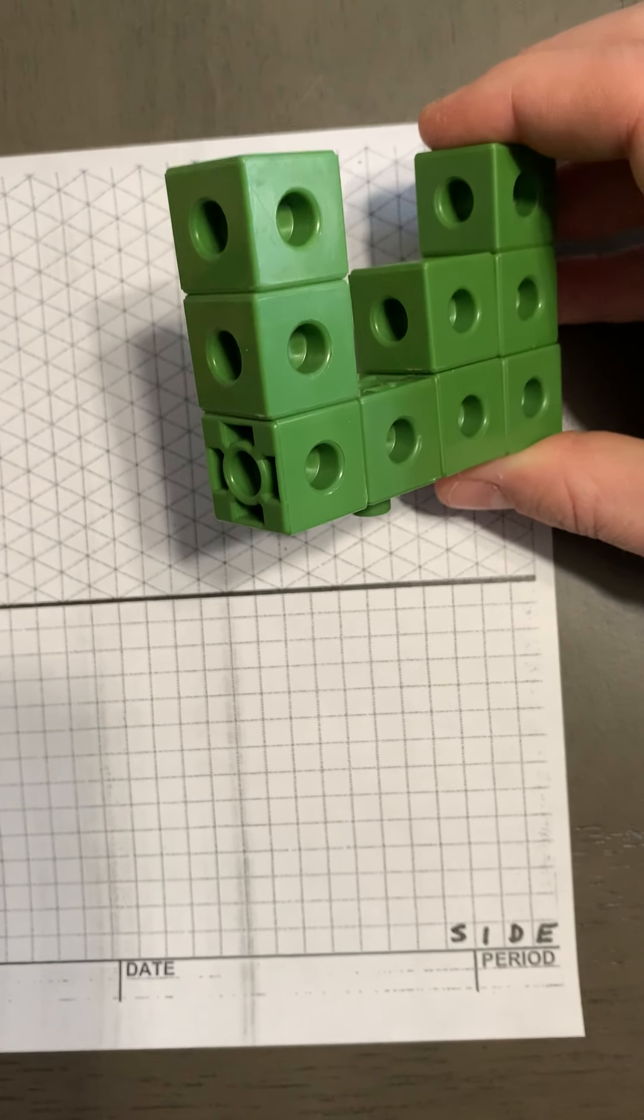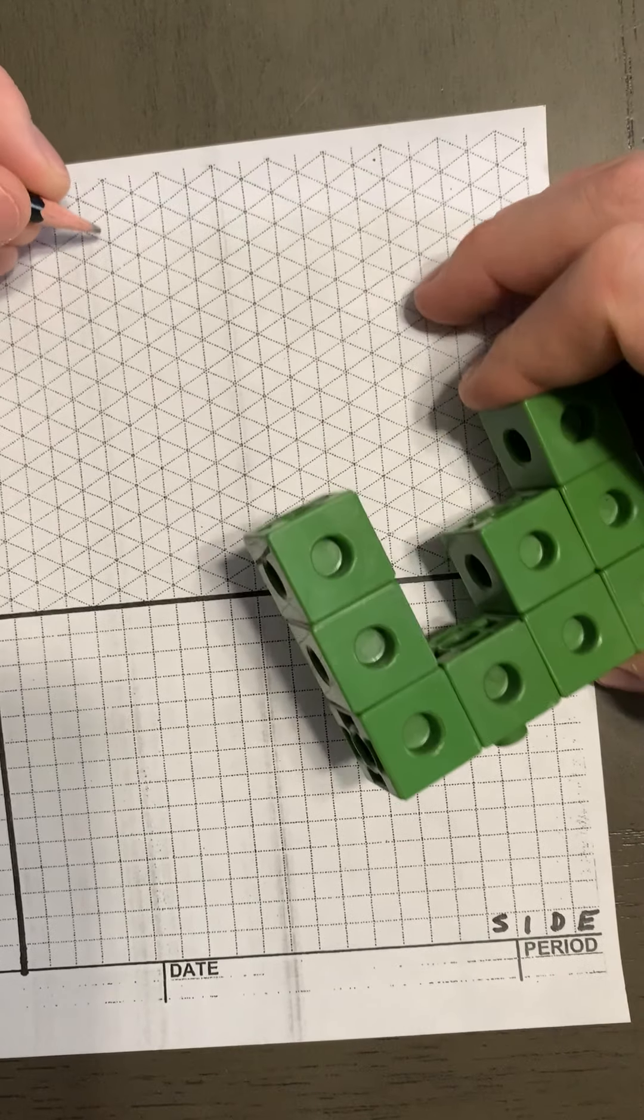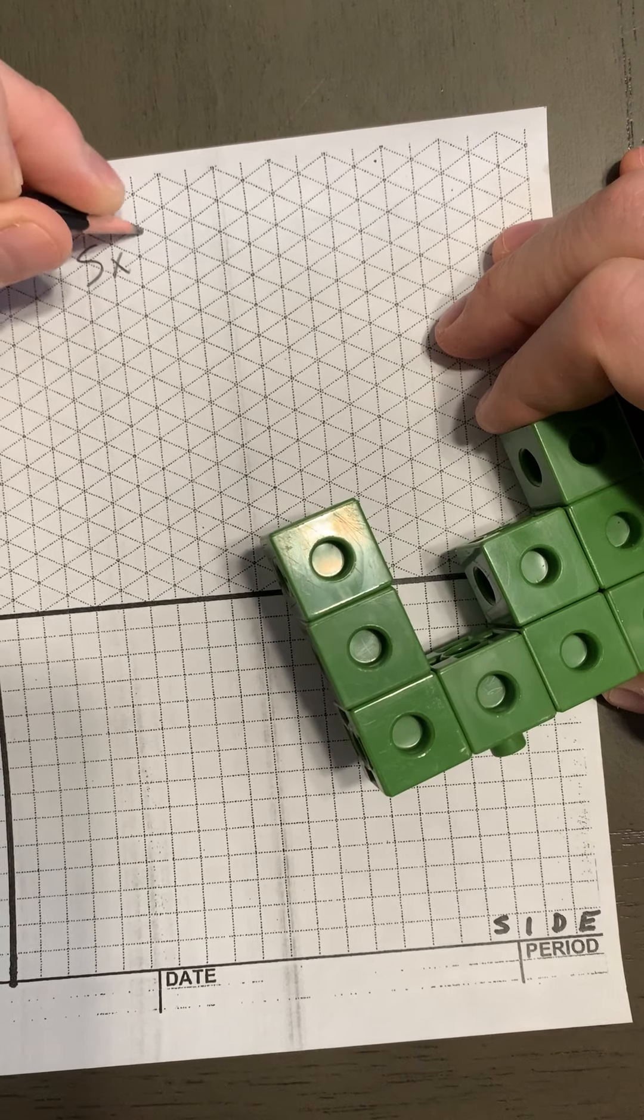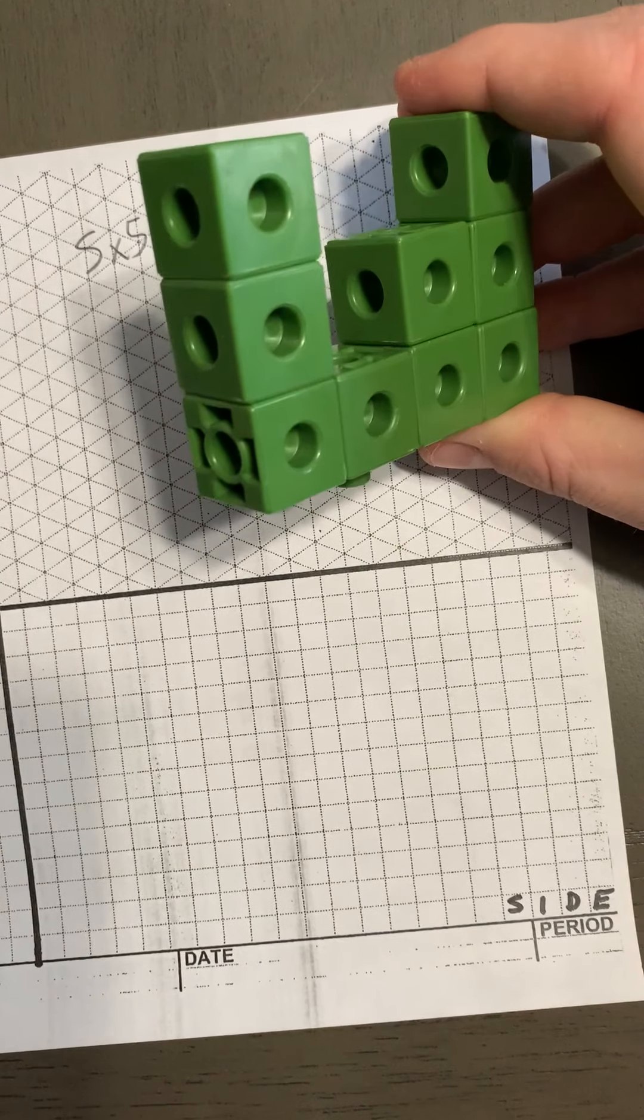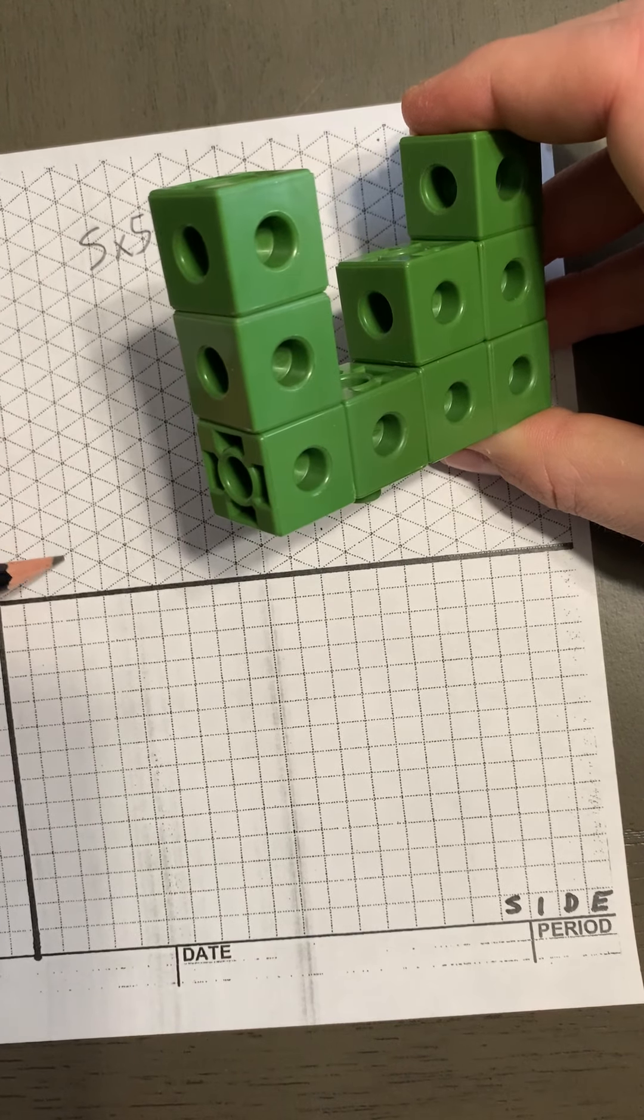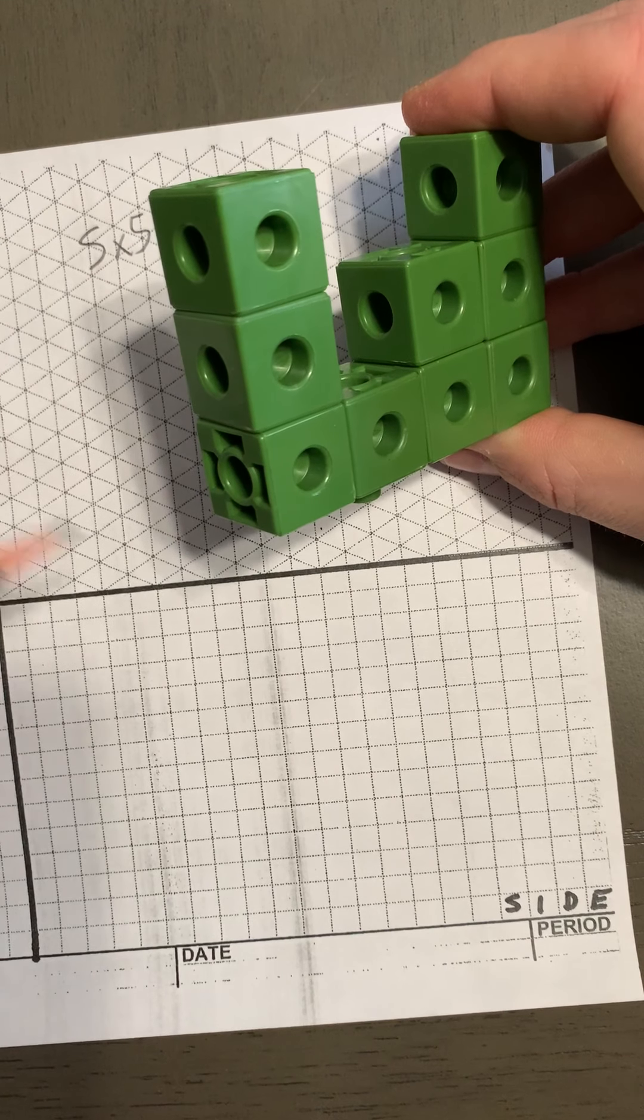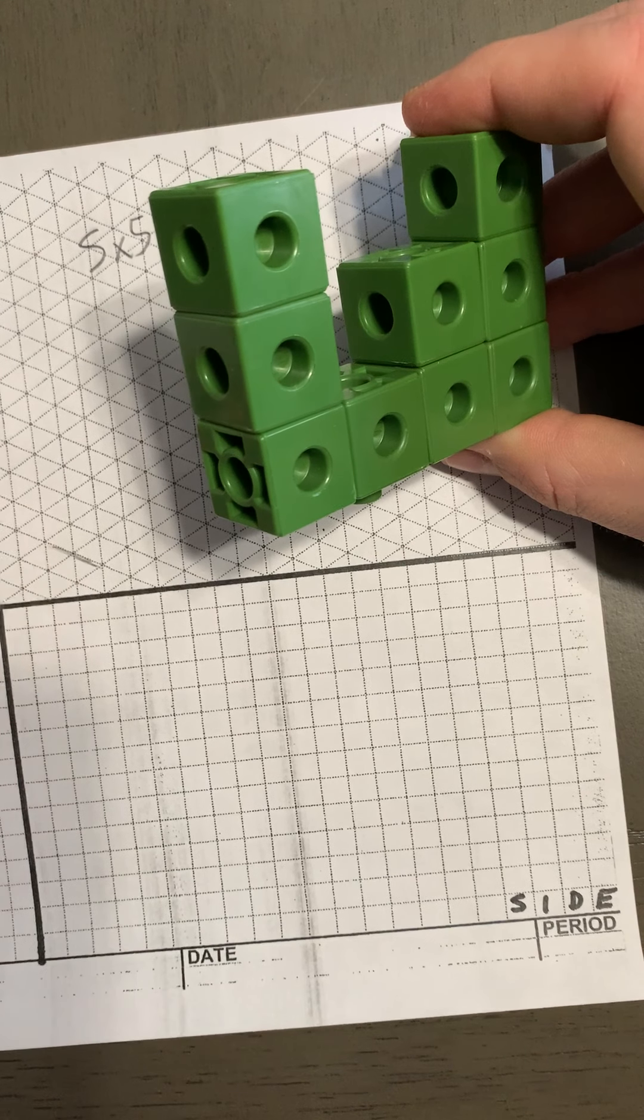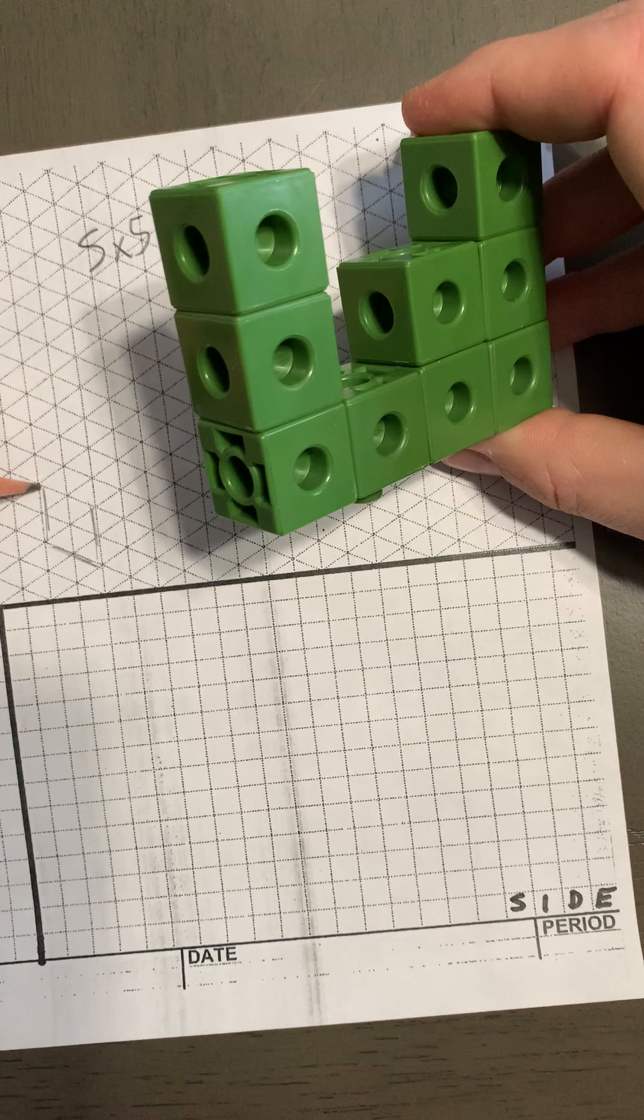All right, doing this one we're going to assume that each cube is 5 by 5. So first thing we're going to do is this tower of three isometric so we can see the top of it.